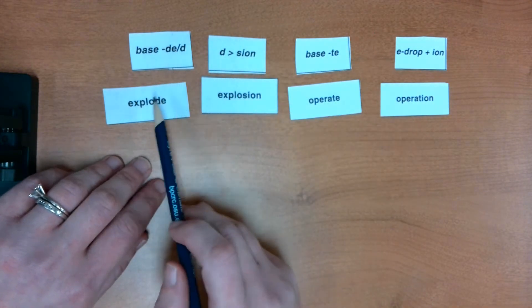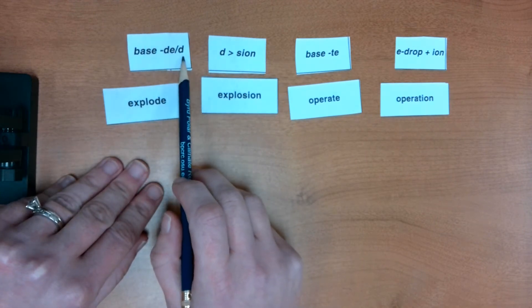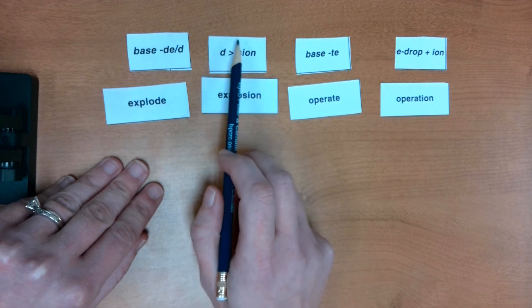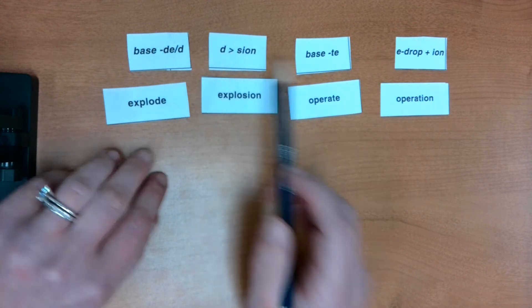If the base word, like explode, ends with a D-E or a D, then we're going to be looking at D-S-I-O-N. So you're changing that D to an S-I-O-N. So I think this header is a little confusing right there. So I might call this a D-dropper.